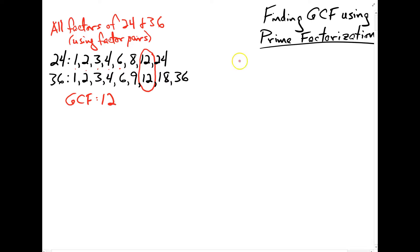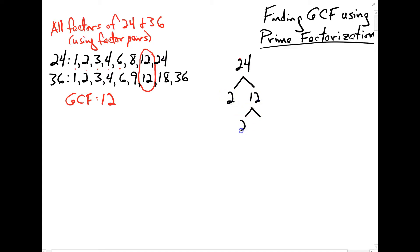If I take the number 24 and find the prime factorization of 24 using factor trees, I could do it like this: 2 times 12, 2 times 6, 2 times 3. And here's my prime factorization of 24, which would be 2 times 2 times 2 times 3.